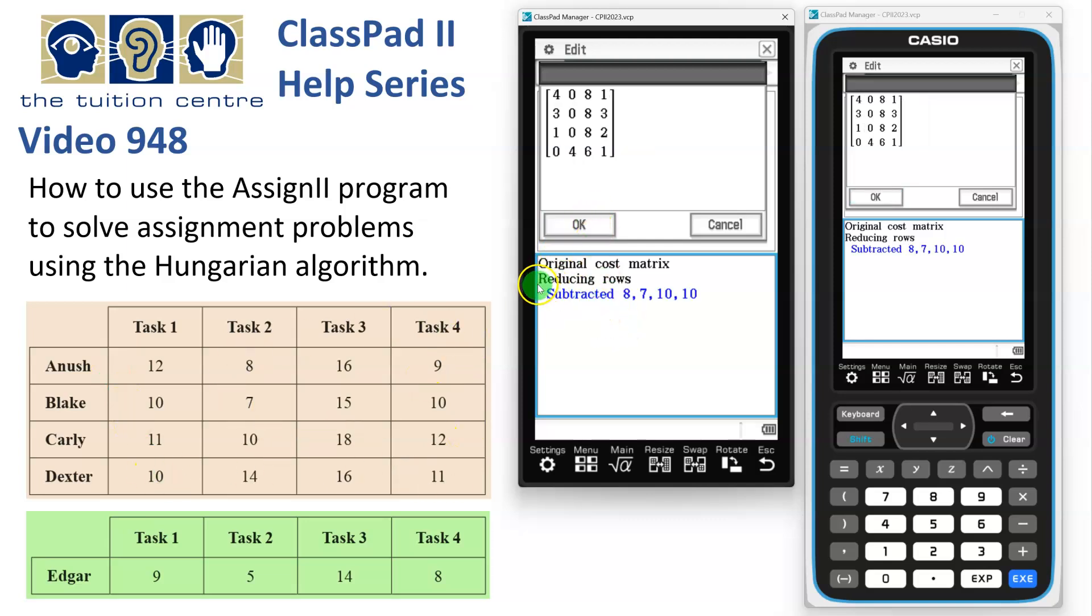And then we tap OK. Now the first job is to reduce the rows. So it's saying we've subtracted 8, 7, 10 and 10 from row 1, row 2, row 3 and row 4. And then we say OK again, and here's the matrix.